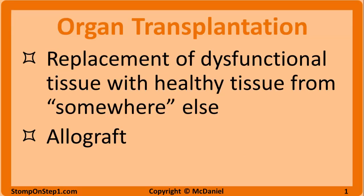Organ transplantation is the replacement of dysfunctional tissue with healthy tissue from somewhere else. An individual can receive an organ donation from an animal, such as a pig heart valve, or they can donate tissue to themselves by moving healthy tissue from one part of the body to another, such as skin grafting following a burn. However, almost all Step 1 questions about transplantation involve one human donating to another who is not their identical twin. This type of transplant is known as an allograft, and that's where we're going to be focusing most of our attention.